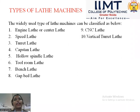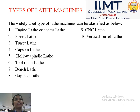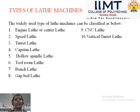There are various types of lathe machine. The first is the engine lathe or center lathe, which is the most ancient type. Others include speed lathe, turret lathe, capstan lathe, hollow spindle lathe, tool room lathe, bench lathe, gap bed lathe, CNC lathe, and vertical turret lathe. The most important and most commonly seen is the center lathe machine, which is easily found in workshop labs.